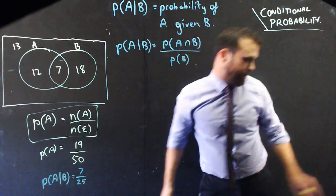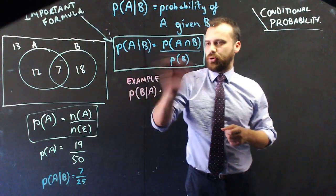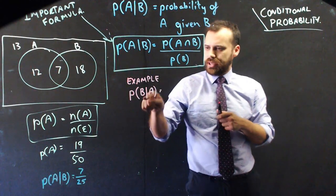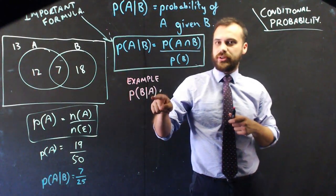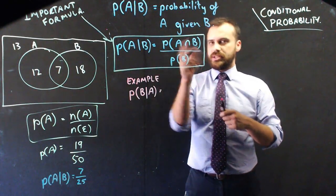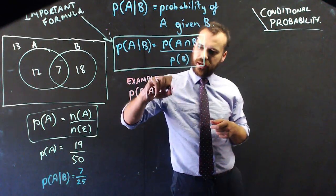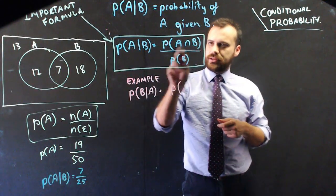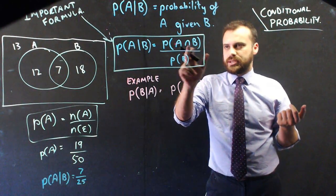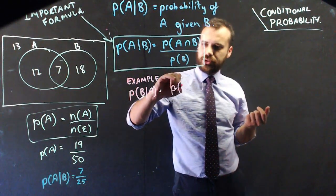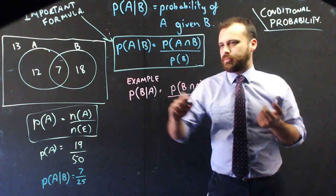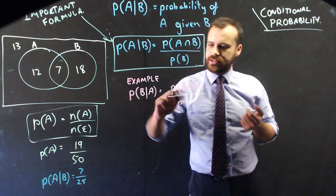So there's our important formula. Now, what if we wanted to know the opposite? What if we wanted to know B given we already know they're in A? Well, we can use this formula, but the B's and A's are reversed. Interestingly, the top doesn't matter if I reverse it or not—A intersection B is the same as B intersection A. So I'll just write it that way anyway, over the probability of A.